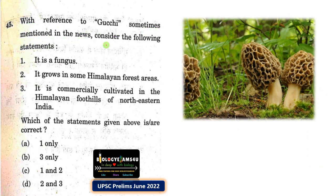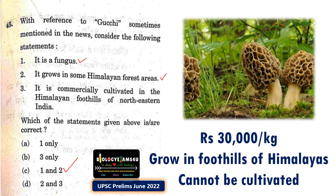With reference to Gucchi, sometimes mentioned in the news — statement 1: it's a fungus; statement 2: it grows in some Himalayan forest areas; statement 3: it is commercially cultivated in the Himalayan foothills of Northeastern India. Gucchi is a mushroom, therefore it is a fungus — statement 1 is right. It grows in Himalayan forest areas — statement 2 is also right. However, it cannot be commercially cultivated, so statement 3 is incorrect, making option C — 1 and 2 only — the correct answer. This is the most expensive mushroom at around 30,000 per kg, because it grows only in the foothills of the Himalayas and cannot be cultivated, so the only way to obtain it is by collection.